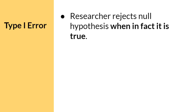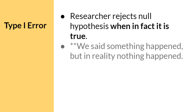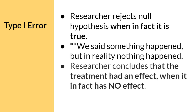The first error is called a type 1 error. This happens when the researcher rejects the null hypothesis when in fact it is true. The decision to reject the null hypothesis means that we said the study worked, or something happened. If the null hypothesis is the prediction that nothing worked, and the null hypothesis is true, that means nothing really happened after all. In other words, we said something happened, but in reality, nothing happened. From a researcher perspective, they concluded that the treatment had an effect, when it in fact has no effect at all. Basically, they said the drug worked, but it really doesn't work.